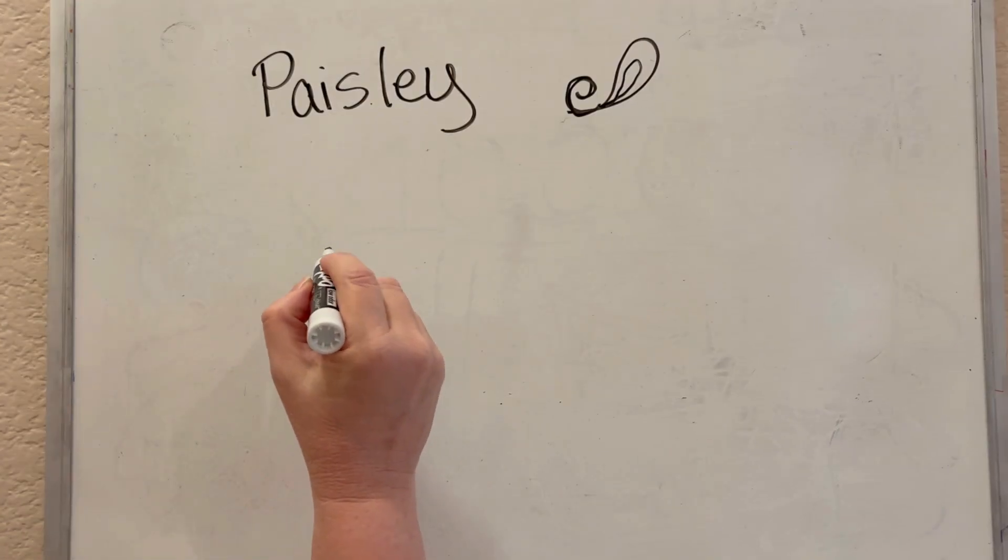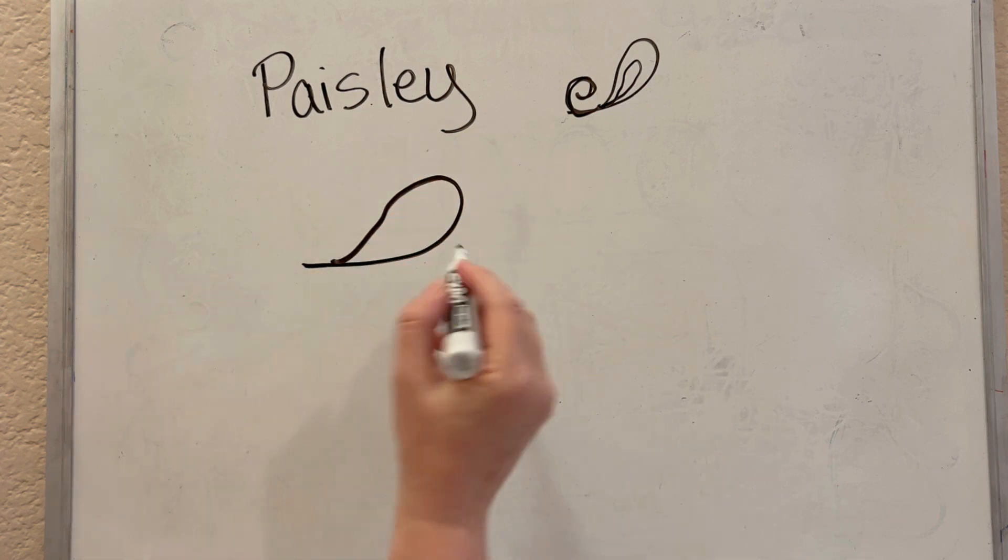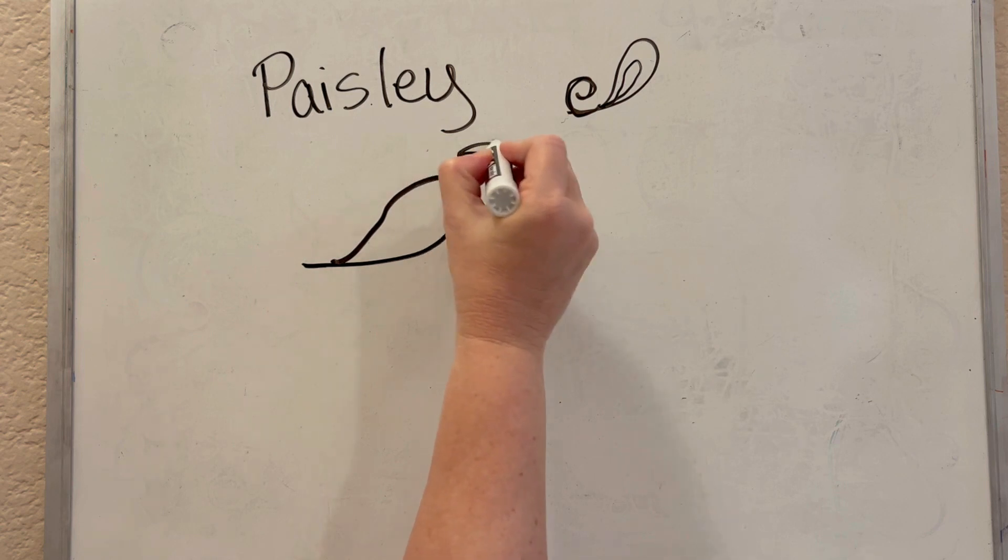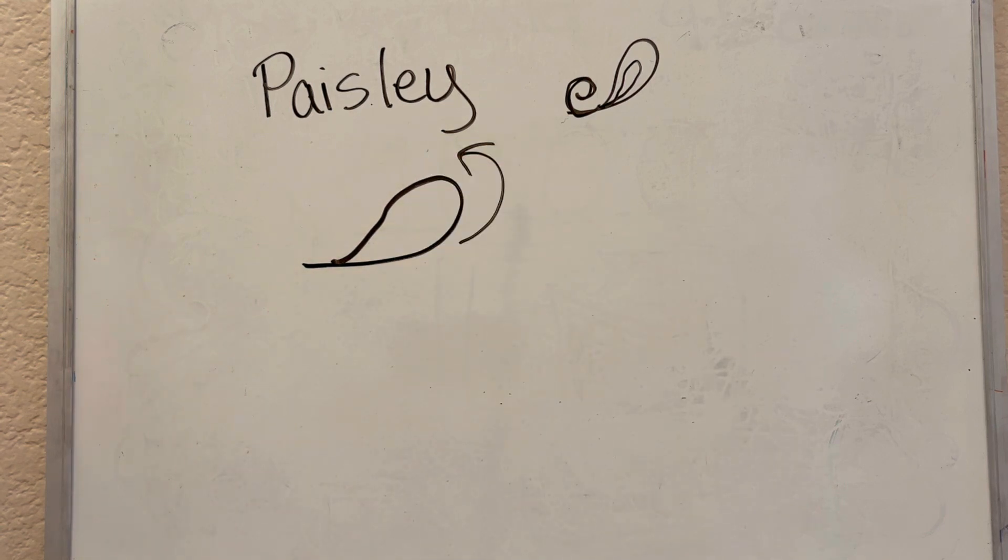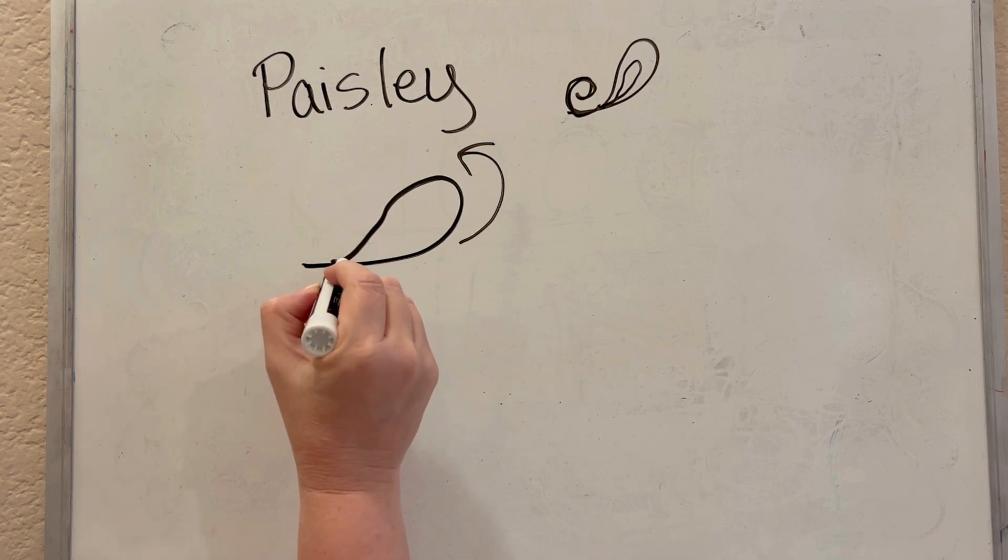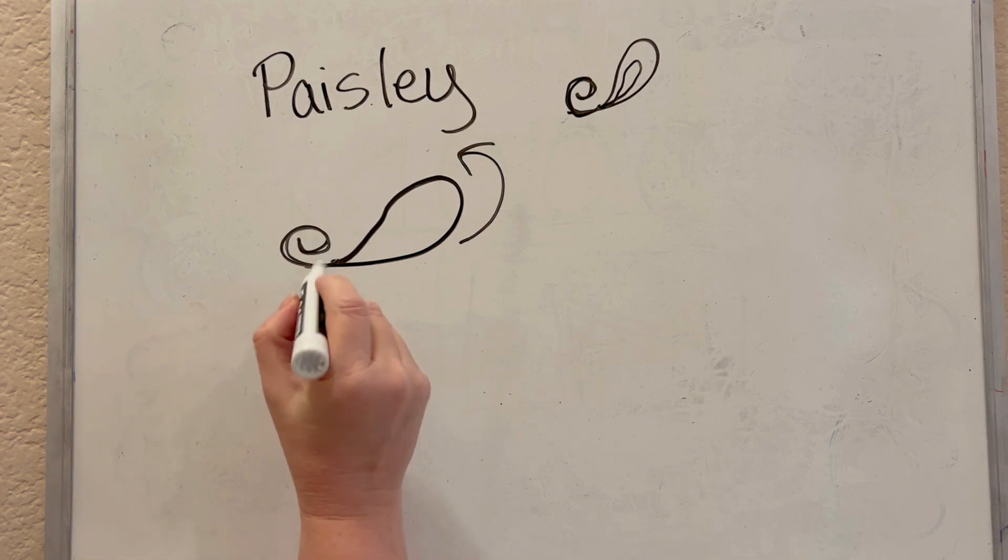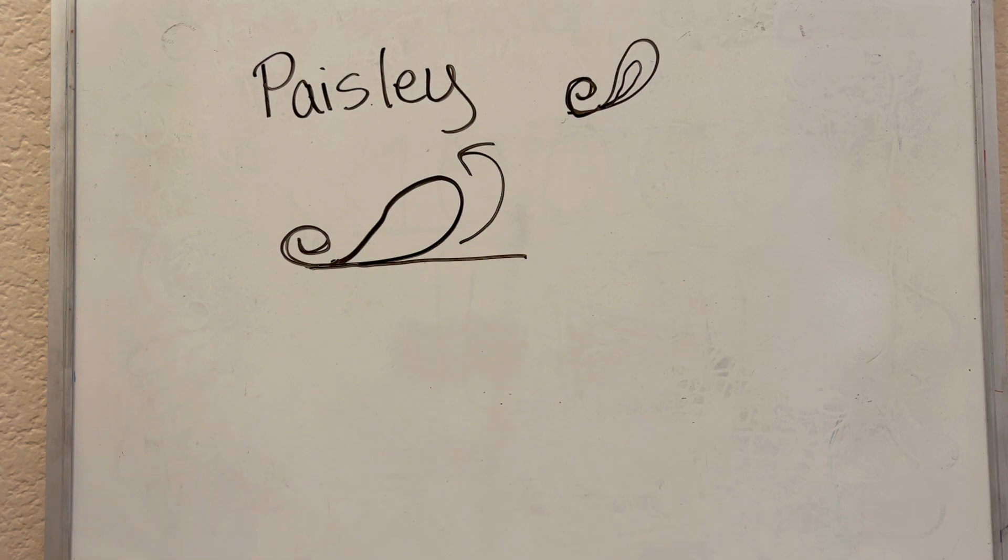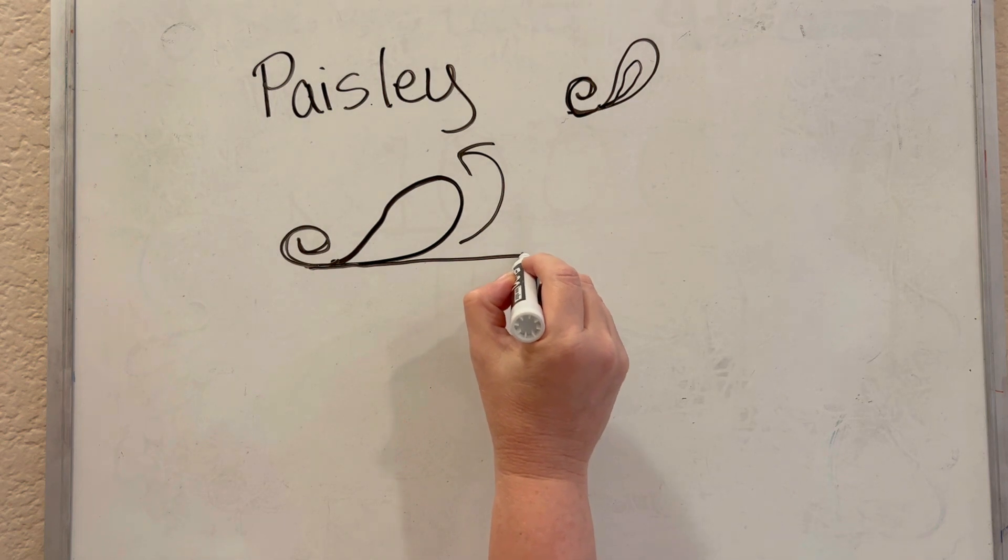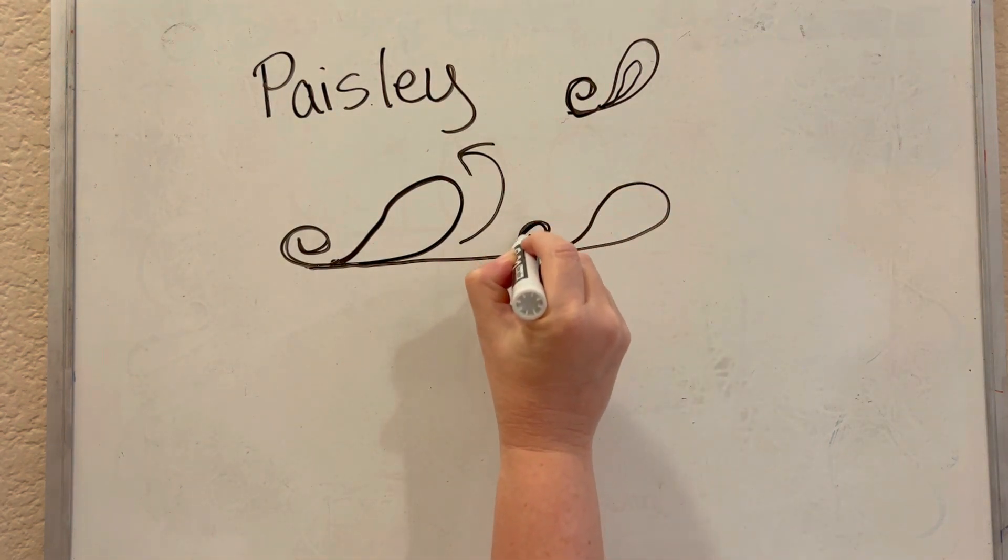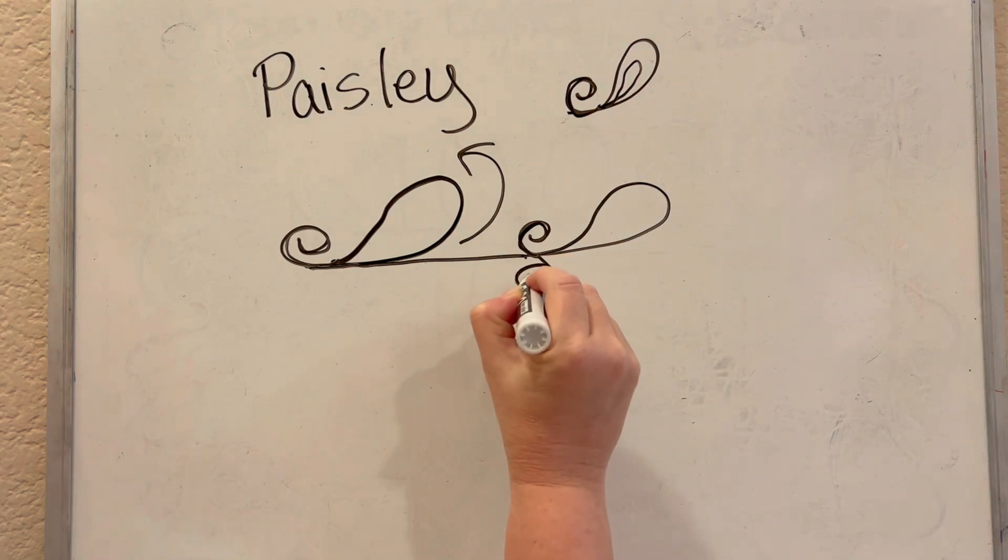To start the paisley shape, we begin with a teardrop shape. I always start at the bottom and curve around counterclockwise, and I connect back to my base and add the curly q tail. So teardrop first, and then the curly q tail. Then I travel along that base line to create another paisley. I can go in the same direction, I can go in a brand new direction.